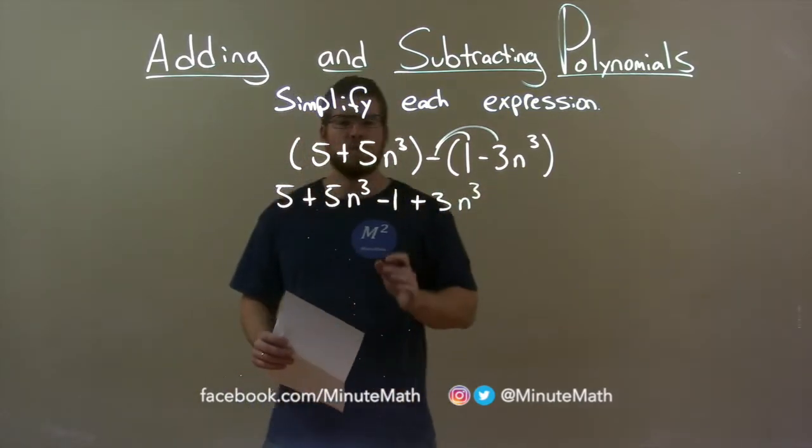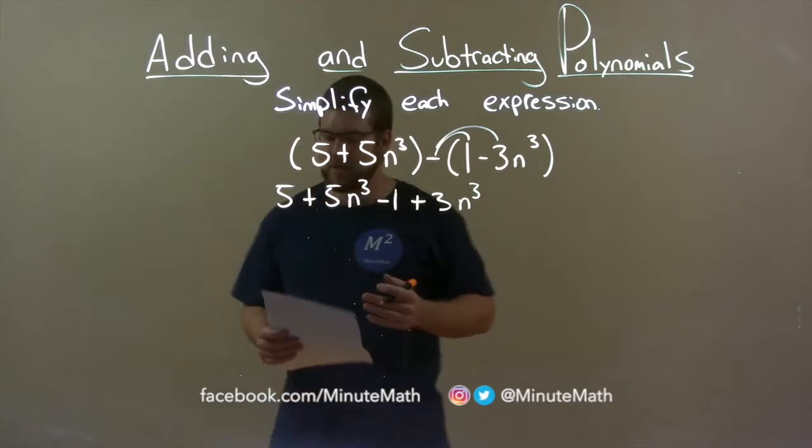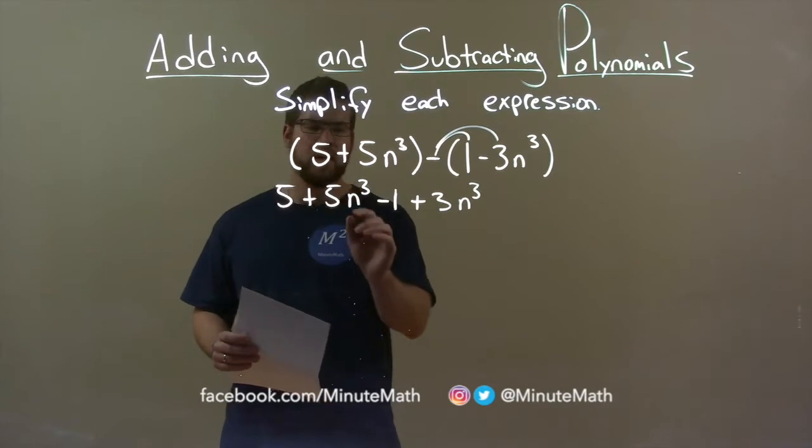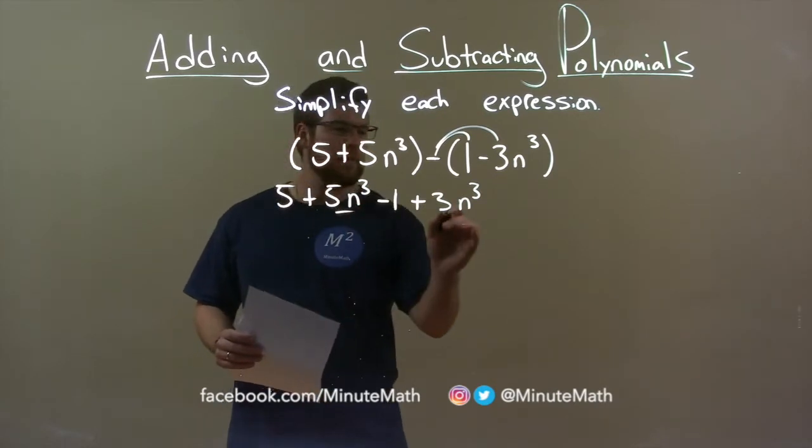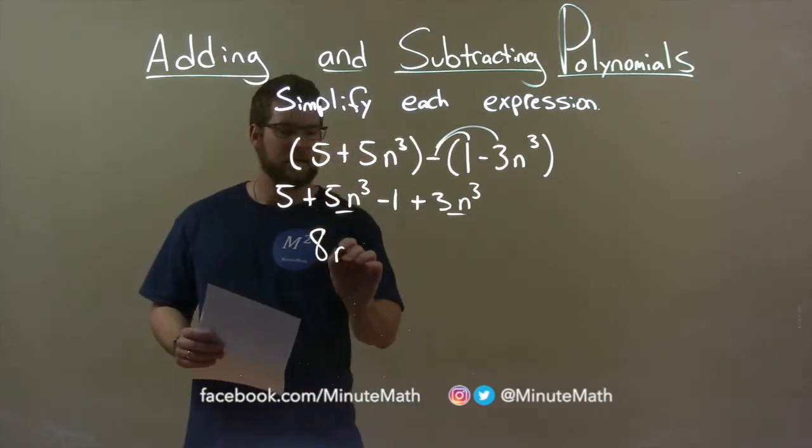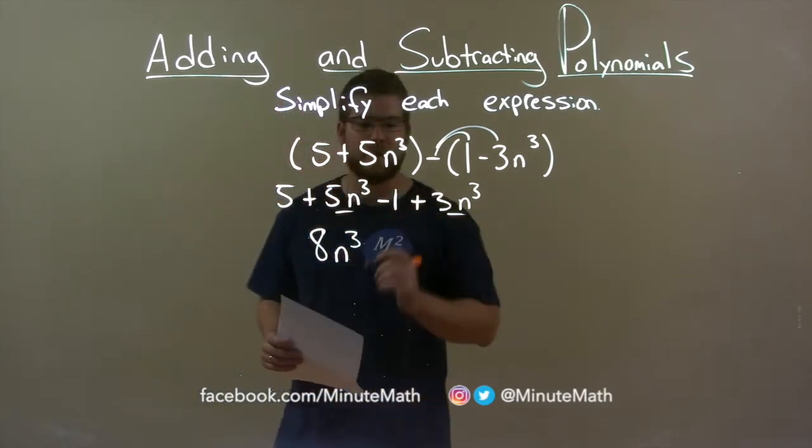So now we're going to combine our like terms. We see we have an n to the third and an n to the third right there. A 5n to the third and a 3n to the third. We add those together. That's our highest degree. That's going to be an 8n to the third right there.